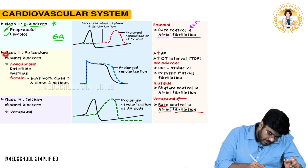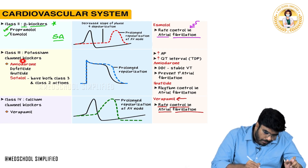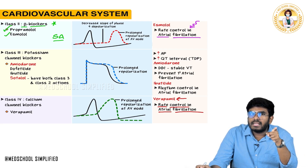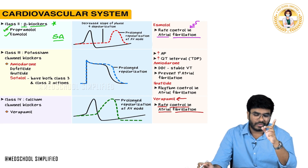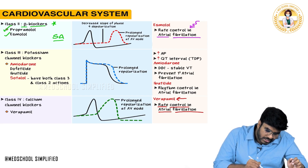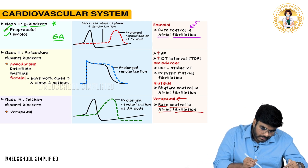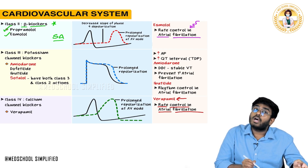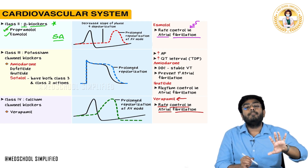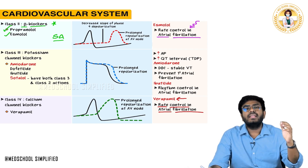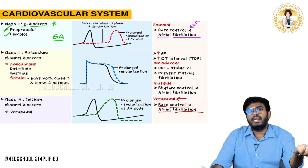Class 3 anti-arrhythmic drugs are potassium channel blockers. When you block potassium channels, QT interval is prolonged, which causes torsades de pointes. Examples of class 3 drugs include amiodarone, dofetilide, ibutilide, and sotalol. Note that sotalol ends in '-lol,' meaning it's also a beta blocker, but its potassium channel blocking activity is greater.